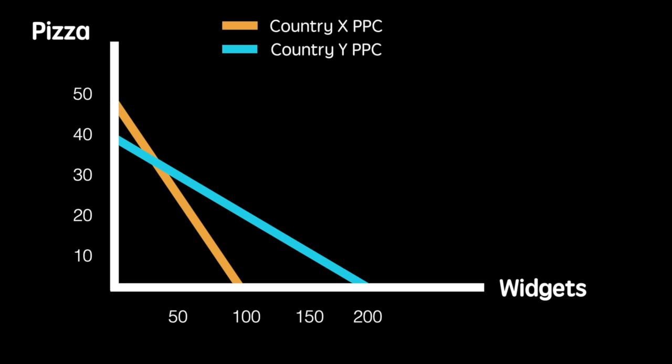But after specializing, each country will focus on either pizza or widgets. With X focusing on pizzas, they can produce 50.